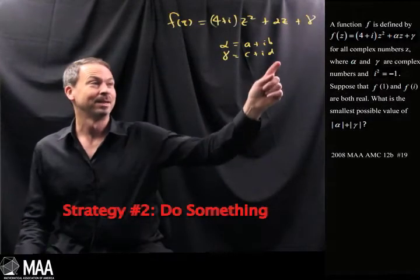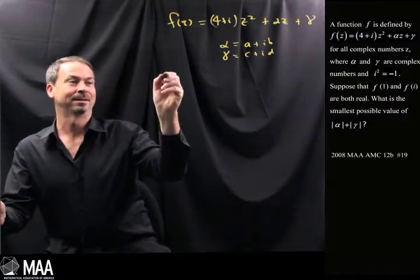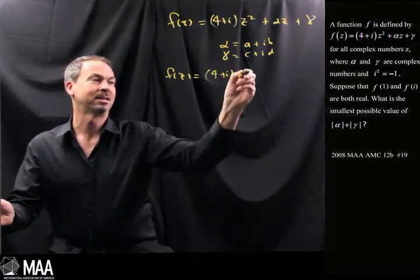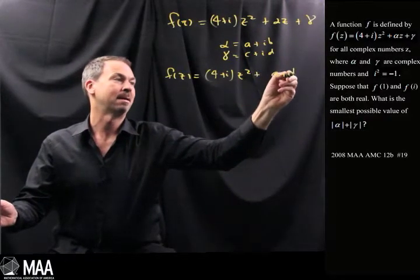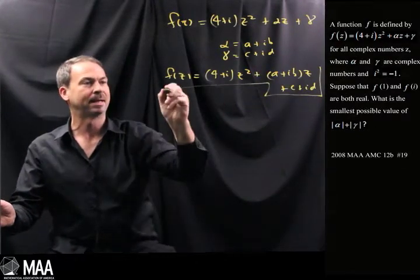Well, for starters, if alpha and gamma are complex numbers, let me just write those into the form instead. So f(z) is actually going to be 4+i z² plus alpha times z, so it's (a+ib)z plus gamma, which is c+id.